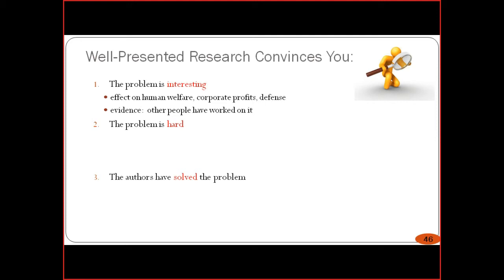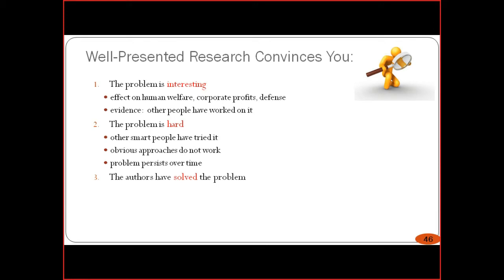Regarding the problem being hard: all smart people have tried it, obvious approaches do not work, and the problem persists over time. Sometimes problems get solved over time; sometimes they get harder and harder. Well-presented research is very helpful. Regarding whether the author has solved the problem: what are the technical details and evaluation — such as proofs or experiments — what methods were adopted, what models were used, what material, data, analysis method, and tools?